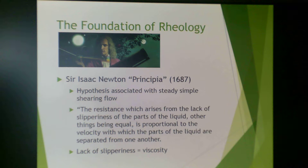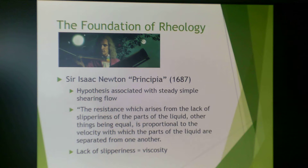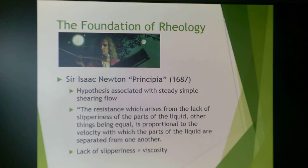Another notable individual is Sir Isaac Newton. Newton wrote the Principia in 1687, and the hypothesis associated with simple shearing flow is attributed to him. It states that the resistance arising from the lack of slipperiness of parts of the fluid, all other things being equal, is proportional to the velocity with which the parts of the liquid are separated from one another — where lack of slipperiness means viscosity. We will spend quite a lot of time on both elasticity, from Robert Hooke, and viscosity, from Sir Isaac Newton.